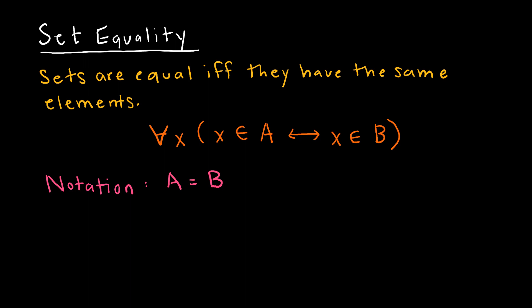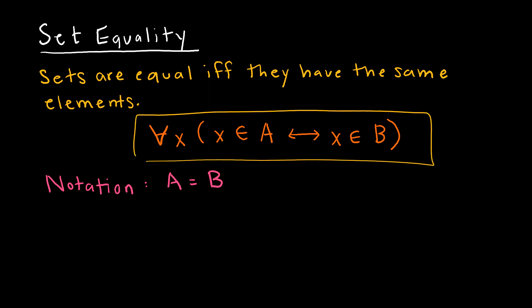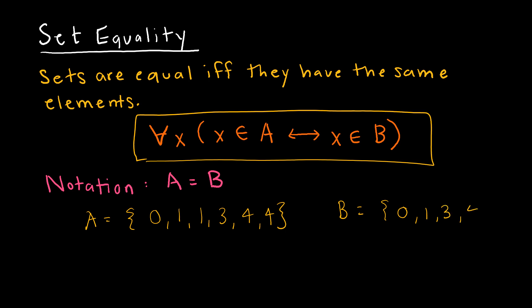Here we're talking about set equality. Sets are equal if and only if they have the same elements. The notation is: for all x, x is an element of A if and only if x is an element of B, and we would write that A equals B. So let's say set A is {0, 1, 1, 3, 4, 4} and set B is {0, 1, 3, 4}.